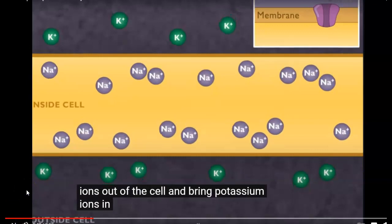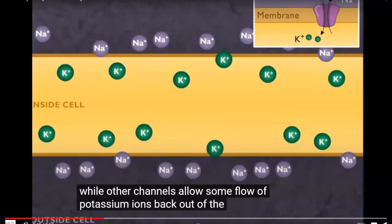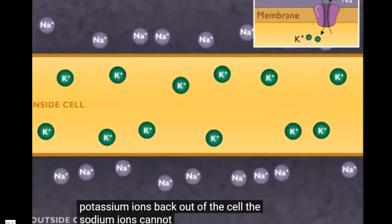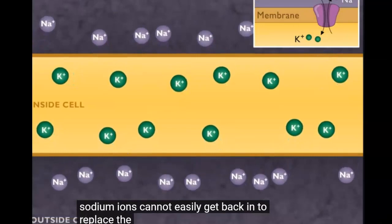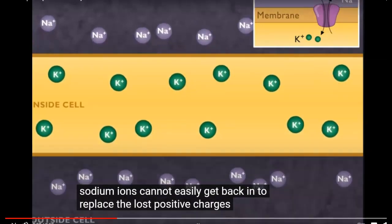This is what we talked about. The pumping moves the sodium out, making a larger amount of sodium outside and a larger concentration of potassium inside. All this is maintained by the pumps. While other channels allow some flow of potassium ions back out of the cell, the sodium ions cannot easily get back in to replace the lost positive charges. This is resting potential.